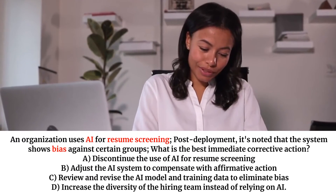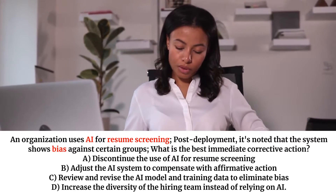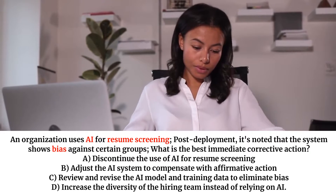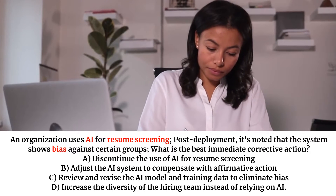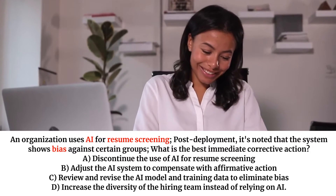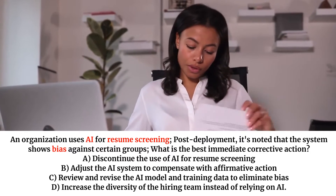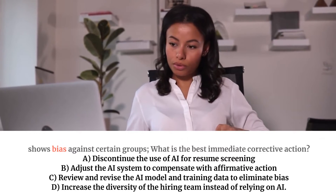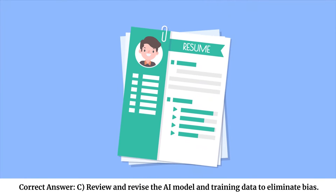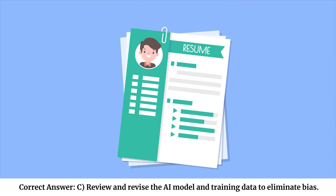An organization uses AI for resume screening. Post-deployment, it's noted that the system shows bias against certain groups. What is the best immediate corrective action? A. Discontinue the use of AI for resume screening. B. Adjust the AI system to compensate with affirmative action. C. Review and revise the AI model and training data to eliminate bias. D. Increase the diversity of the hiring team instead of relying on AI. Correct answer: C. Review and revise the AI model and training data to eliminate bias.